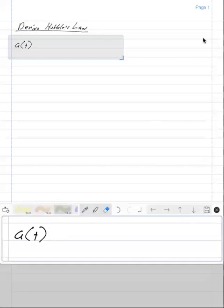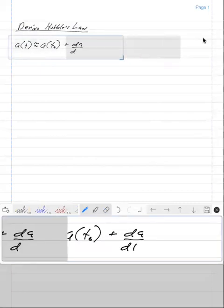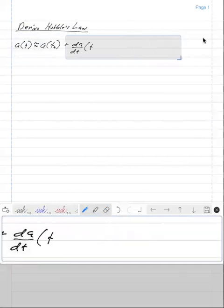Let's go ahead and be explicit. The scale factor of the universe is roughly the scale factor of the universe today, plus how the scale factor is changing with time, times T naught minus T.